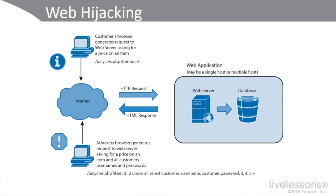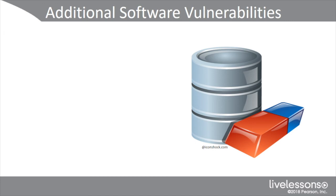Other hijacking attacks include clickjacking, which takes advantage of you entering the wrong URL — also called a user interface redress attack, UI redress, or typosquatting. Attackers register domain names close to real ones, like a misspelling of 'google,' find misspelled variants of domains, register them, and place their exploit on that web server.